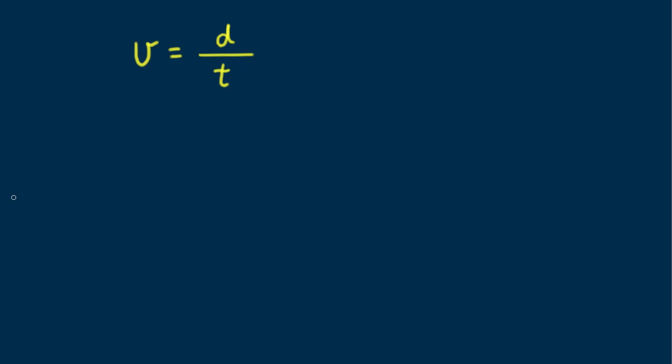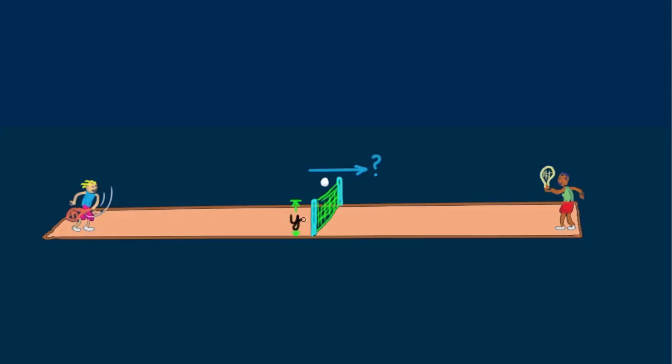Now some important physics. The time t it takes for the ball to hit the court will be the same time as if we had dropped it from the top of the net from rest, a vertical distance y.